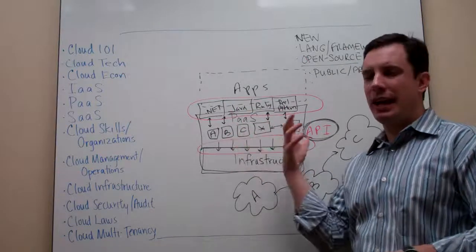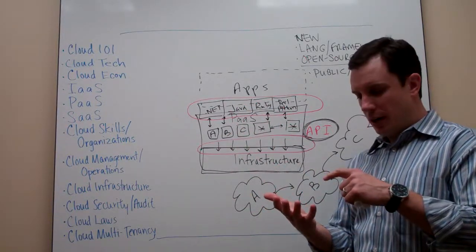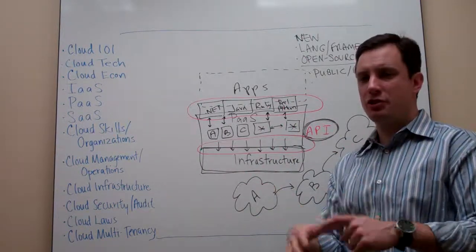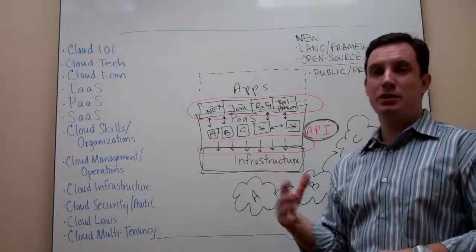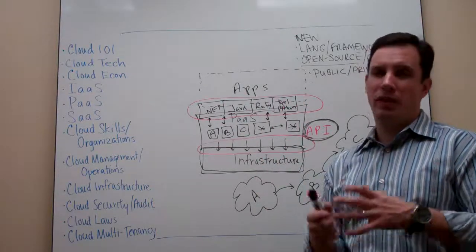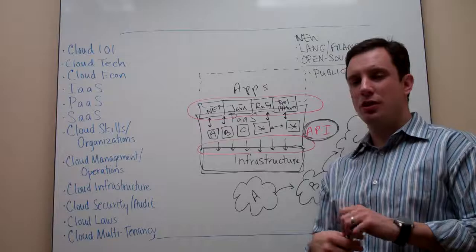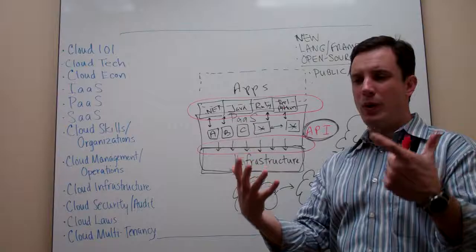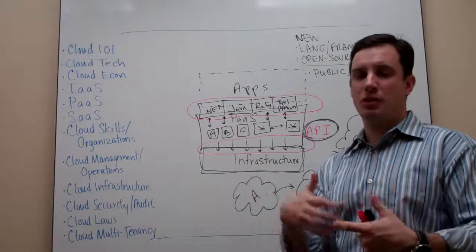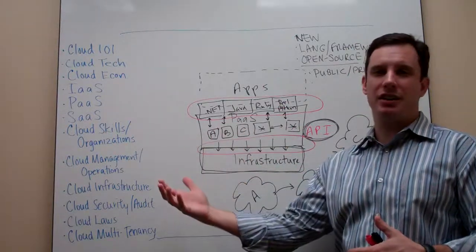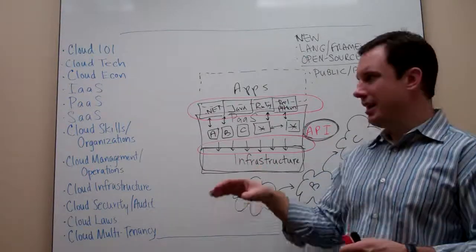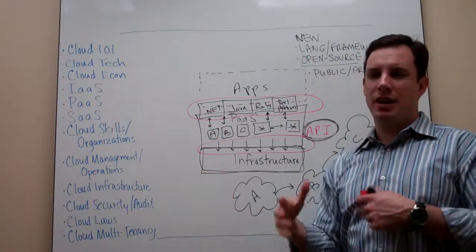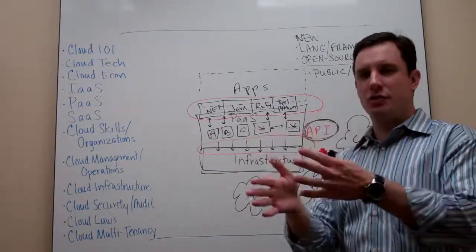And the PaaS platforms are looking at how do they distinguish themselves. Whether it's through better architectures, more sophisticated architectures, more scalable architectures. Whether it's through lots of frameworks and languages that developers can write to. Whether they're open source or closed source. But ultimately, PaaS becomes that new type of operating system. That new way that people are going to write applications going into the future. For the next 5, 10, 15 years. And they're writing them in a way that sort of becomes the native language. The native operating system for cloud computing environments. As opposed to the old server-centric environments.